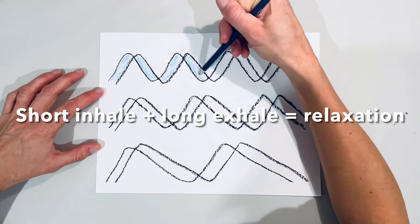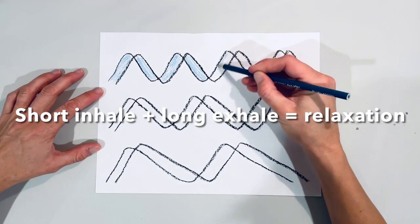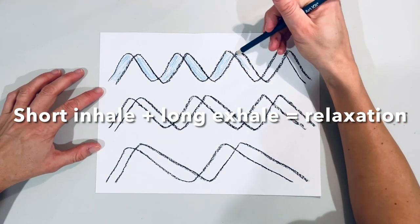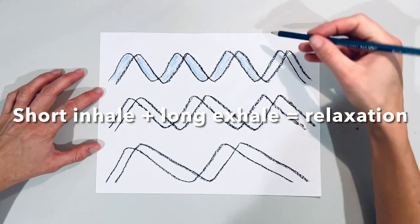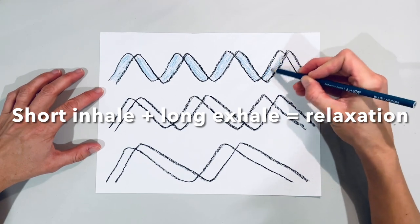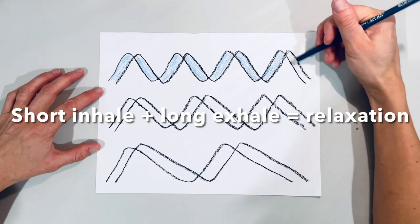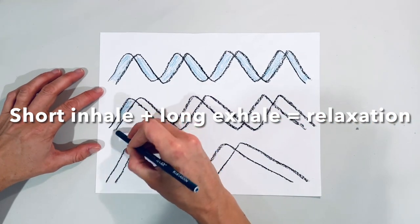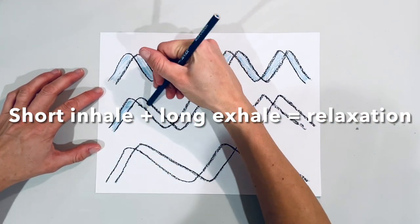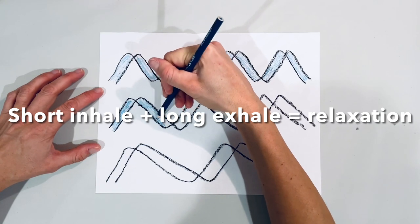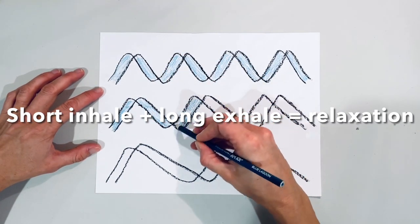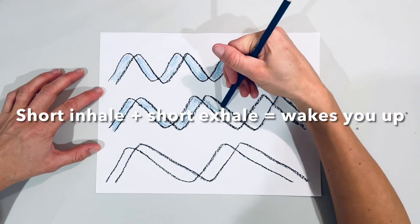A short inhale and a long exhale in meditation can promote relaxation by engaging the body's parasympathetic nervous system. This pattern may signal to the body that it's safe to calm down, reducing stress and promoting a sense of tranquility. The extended exhale also aids in releasing tension and focusing the mind, fostering a mindful state during meditation.